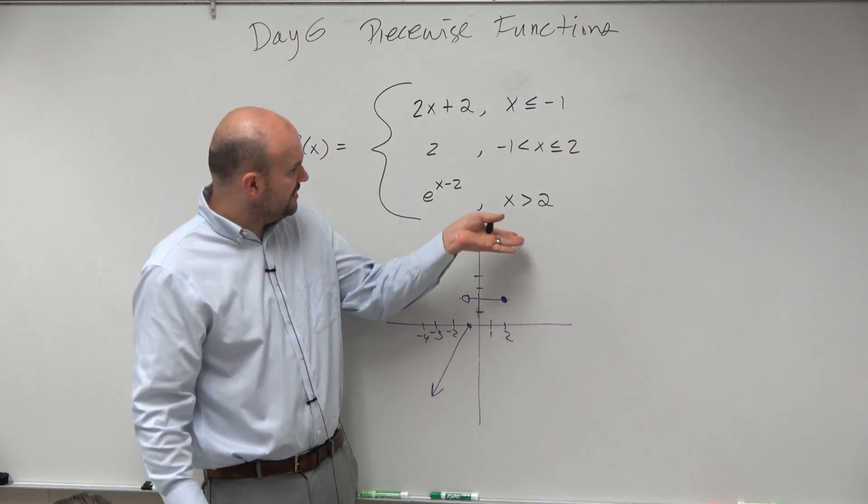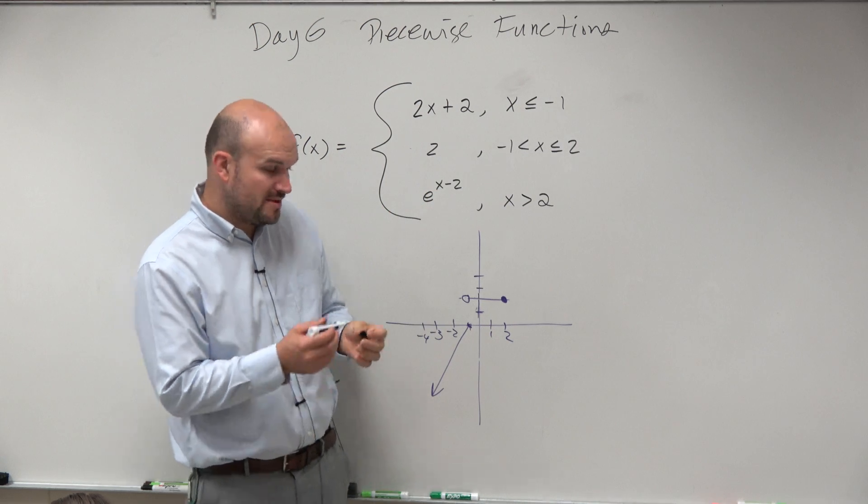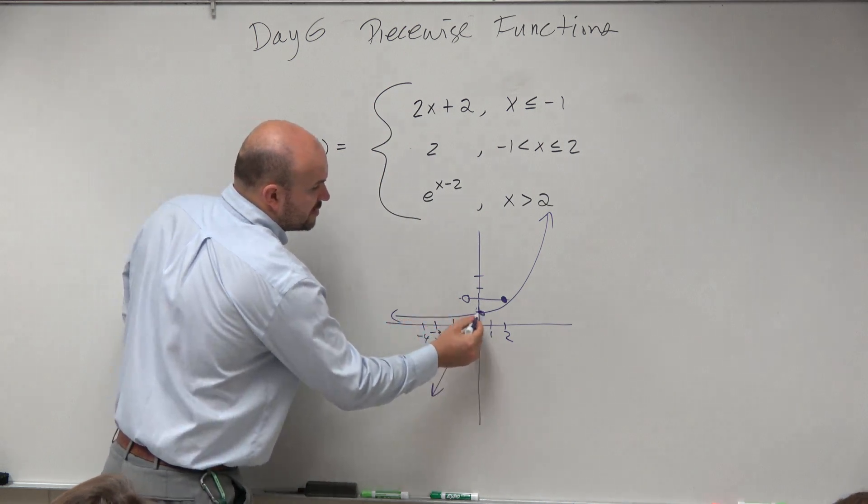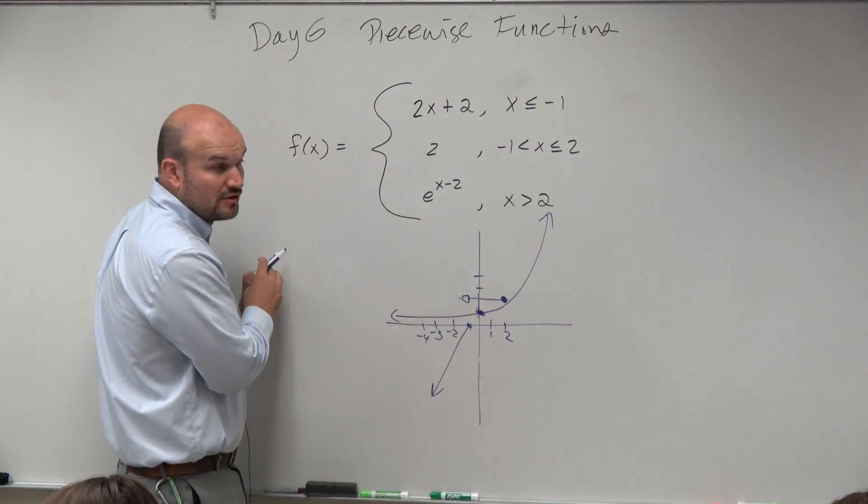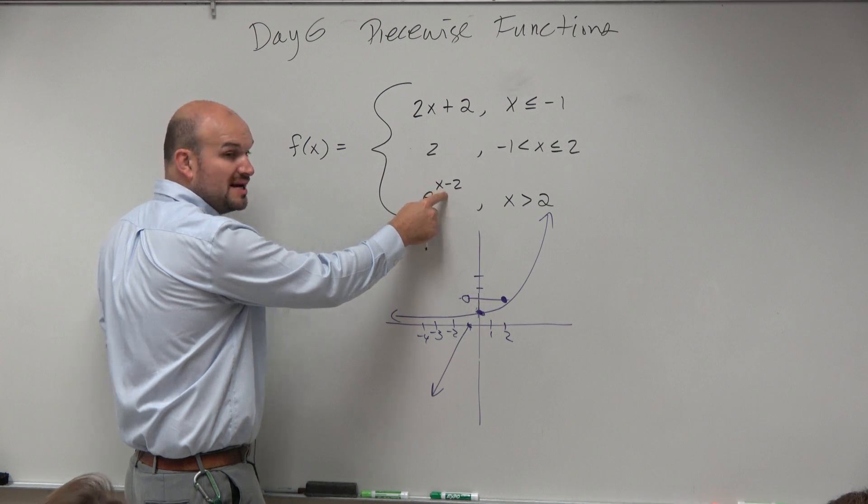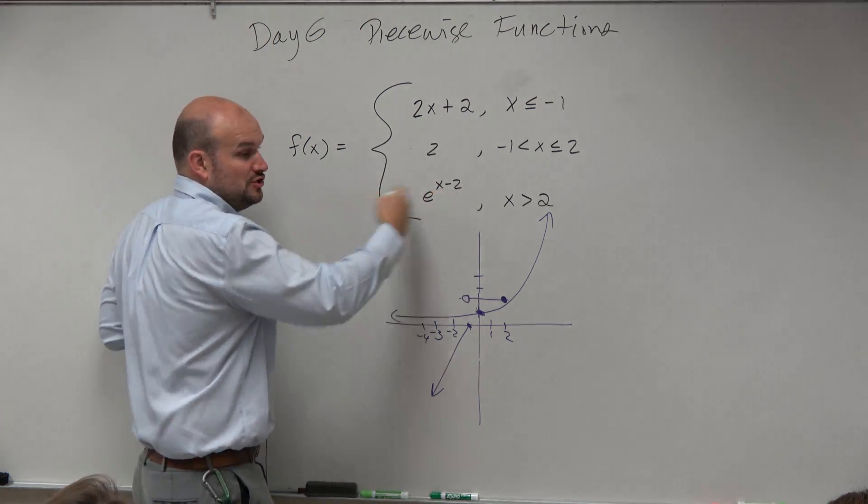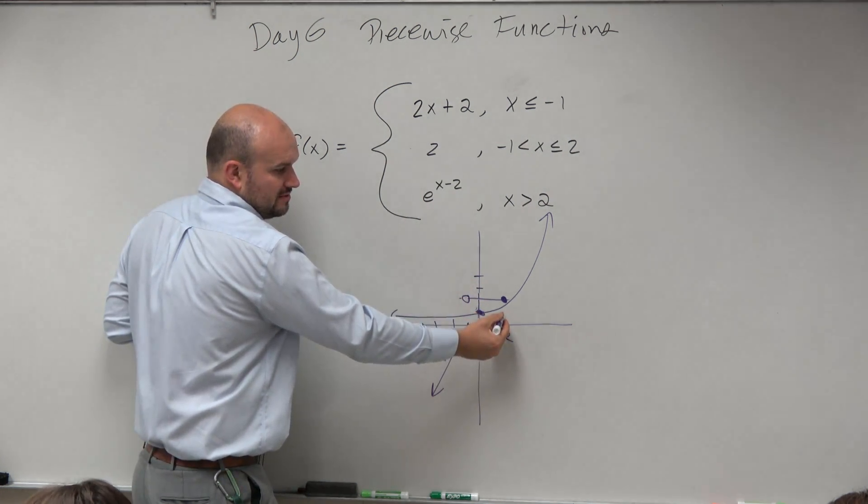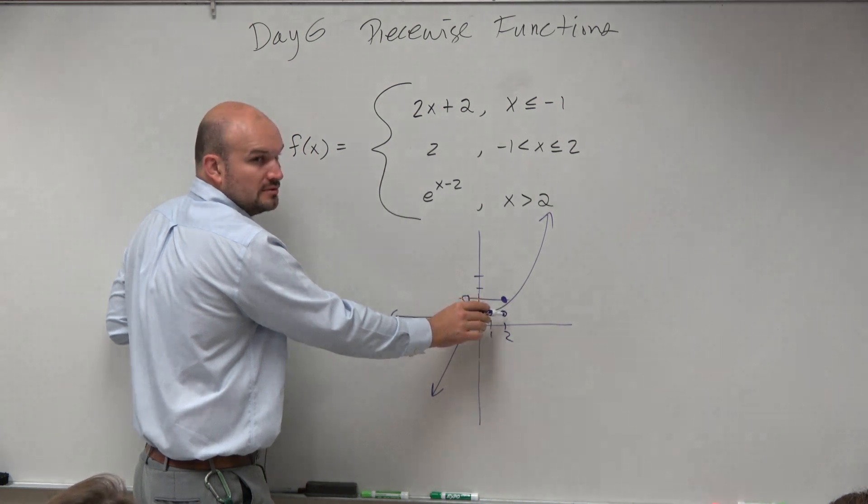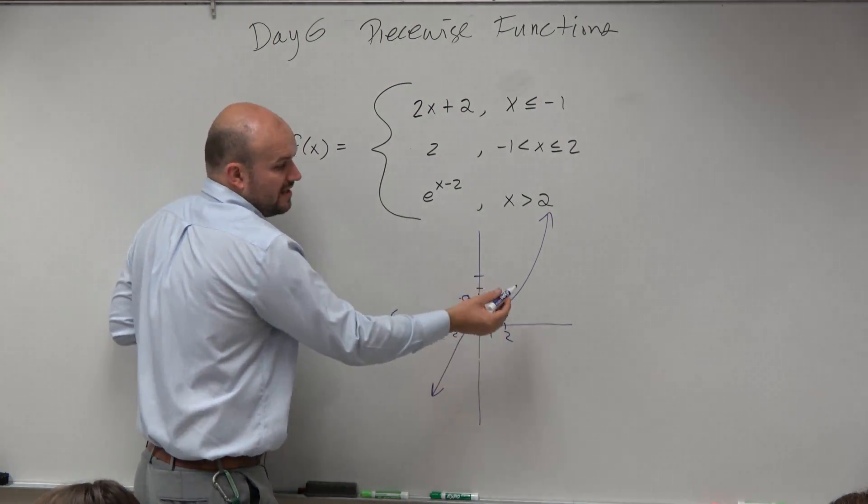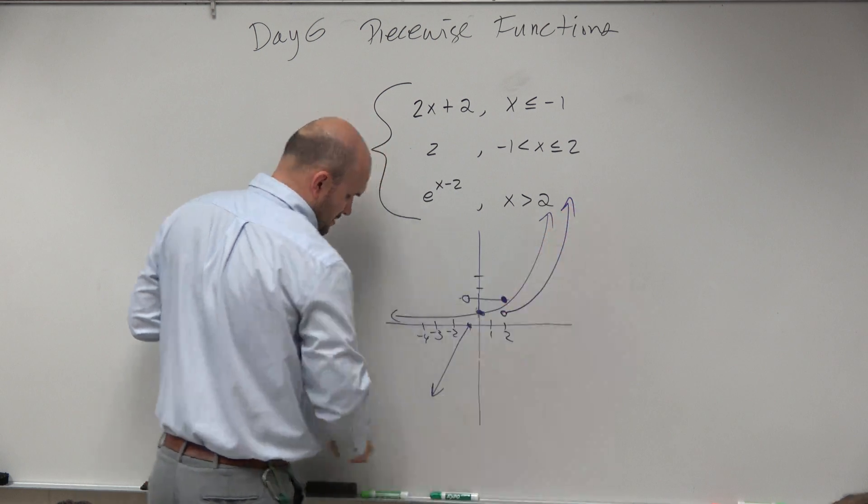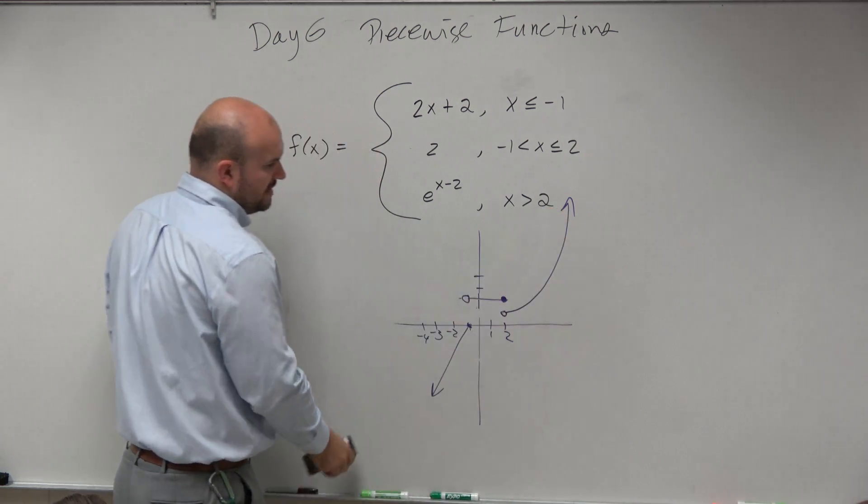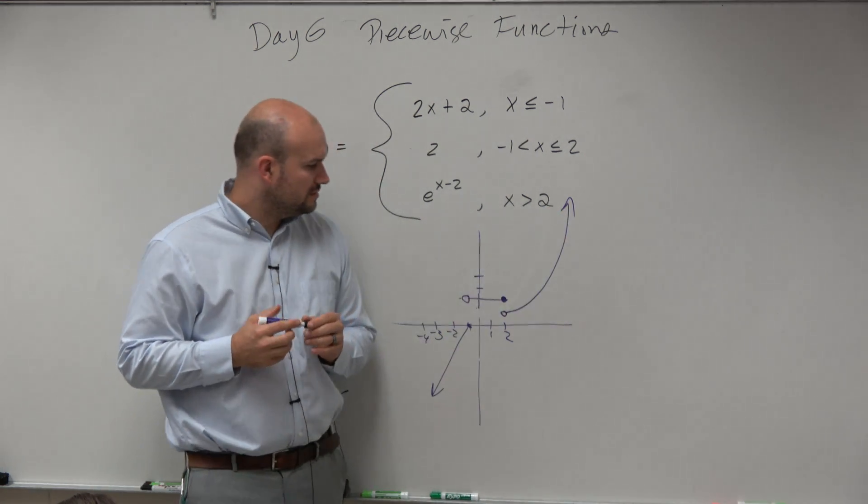And then the last one is e to the x minus 2. Now remember, e to the x looks something like this, where it crosses at 0 comma 1. But if I'm shifting this, this is a minus 2 inside the function. So since I'm shifting this two units to the right, this y-intercept is now being shifted over here. And it's going to be an open circle though. Do you guys agree? And then I just kind of continue that graph. And then now that is our beautiful graph.